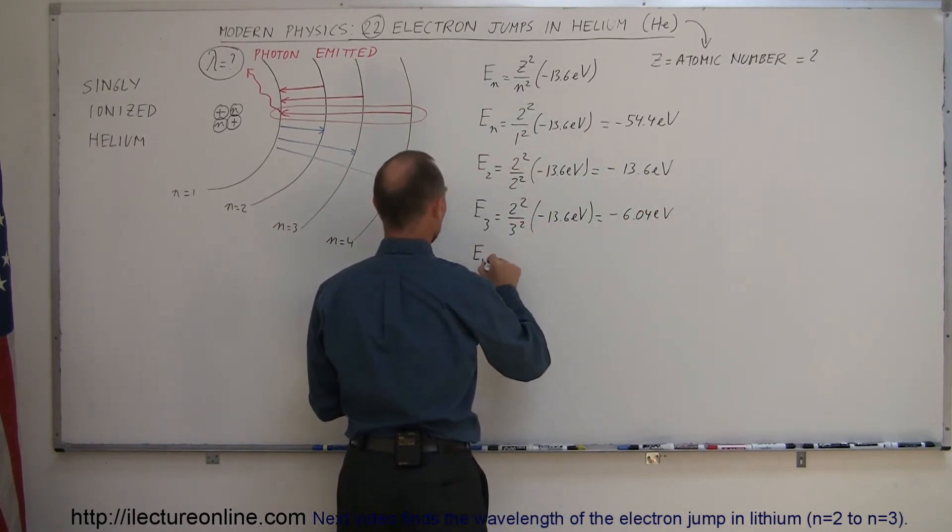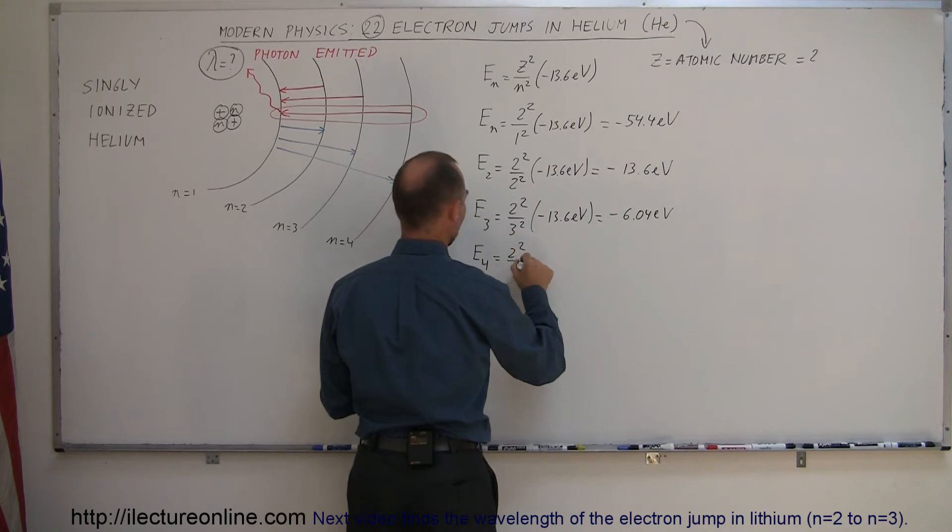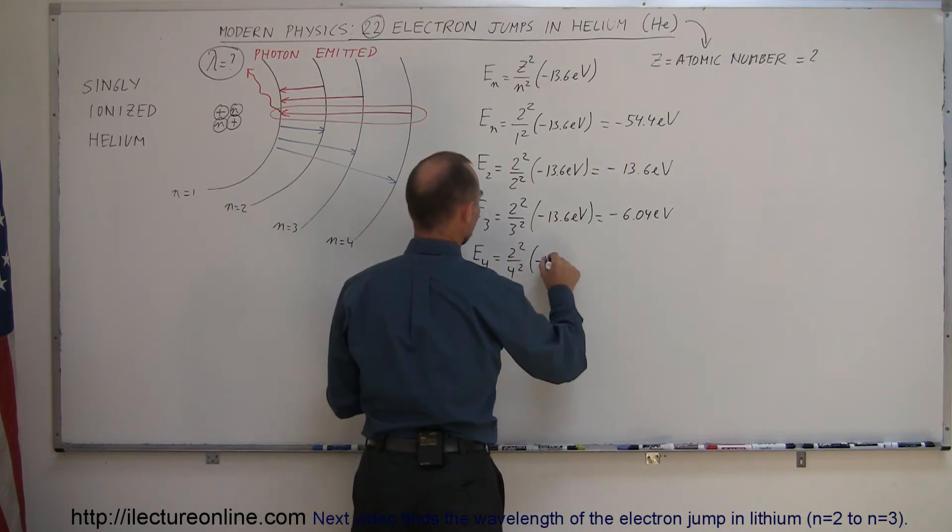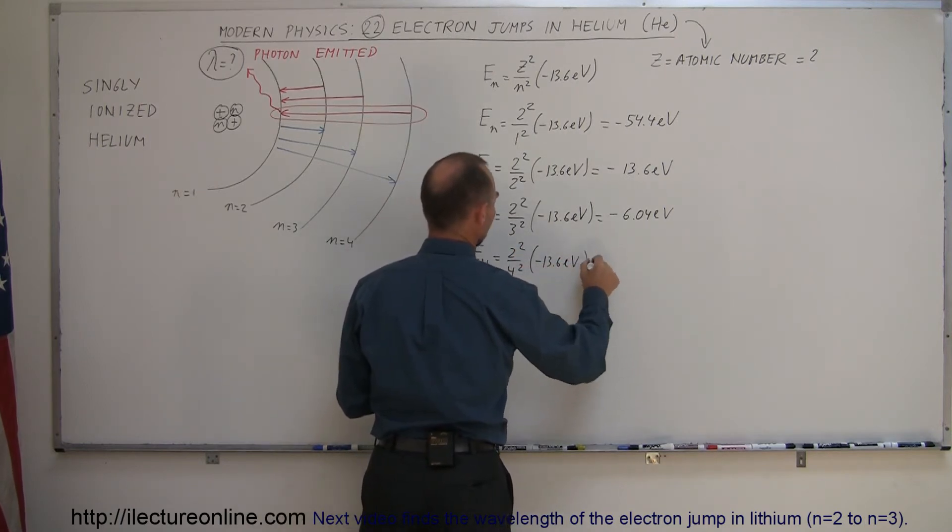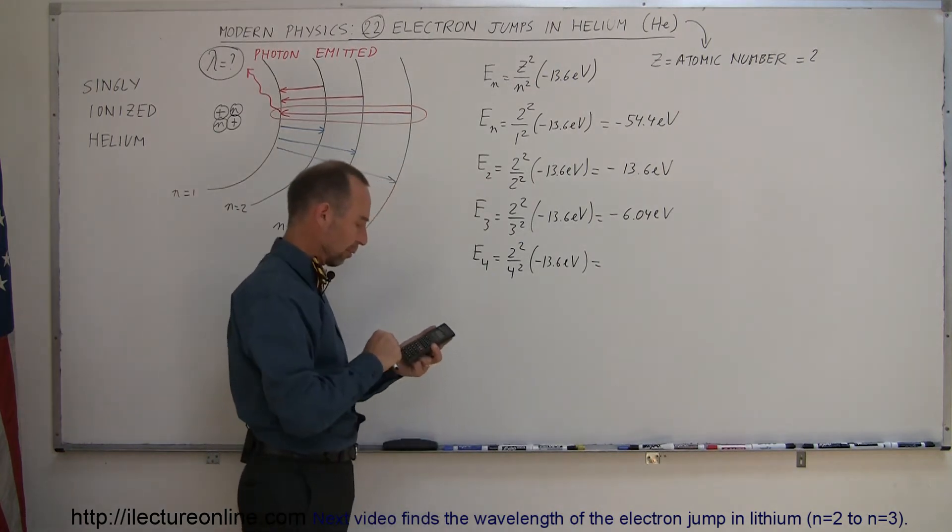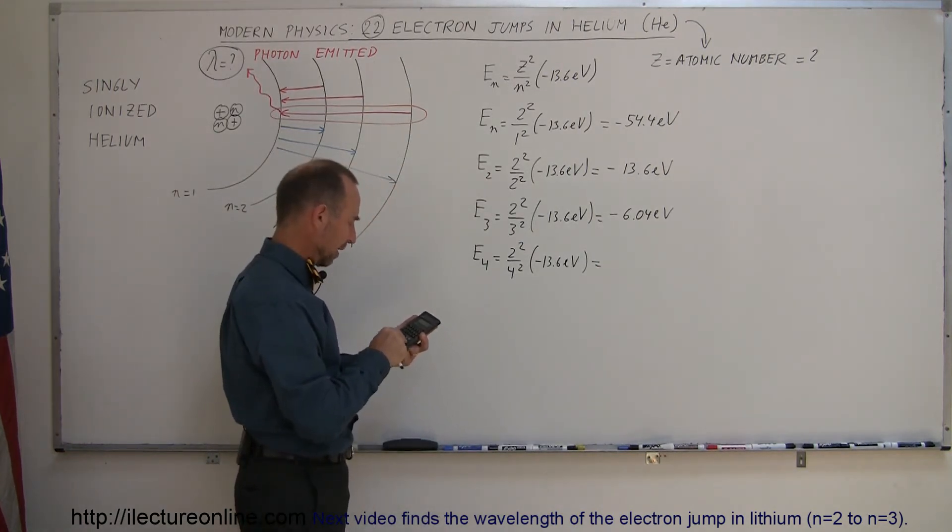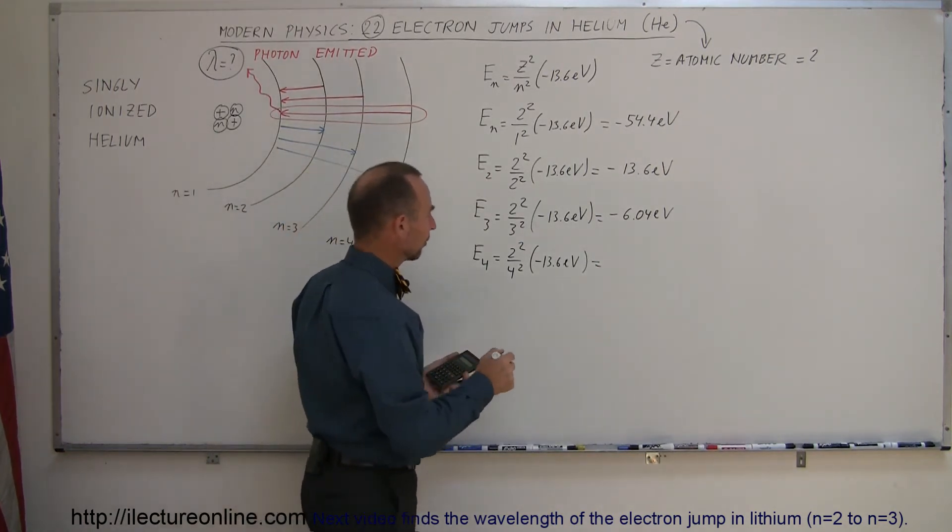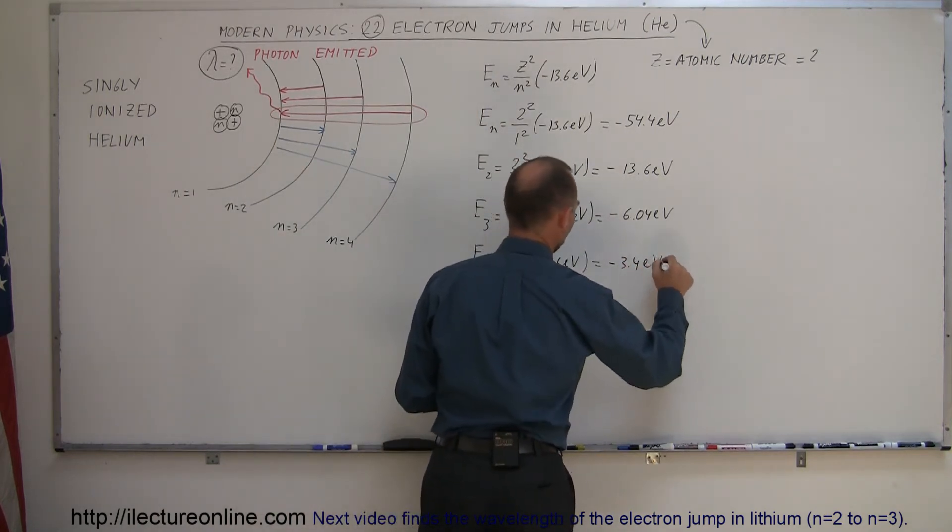And E-sub-4 is equal to 2-squared divided by 4-squared times minus 13.6 electron volts. And that would be 54.4 divided by 16, and that gives us minus 3.4 electron volts.